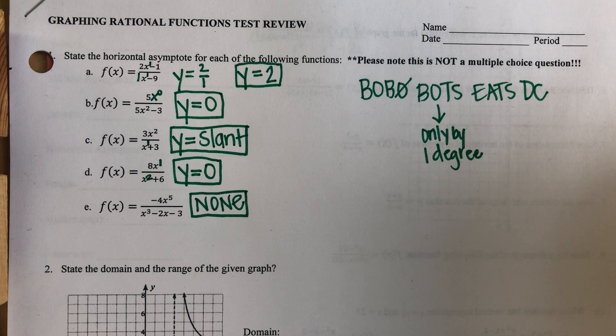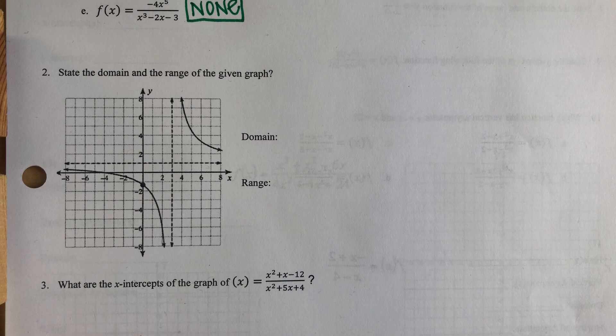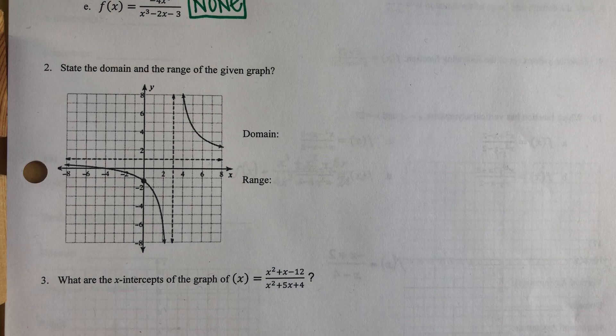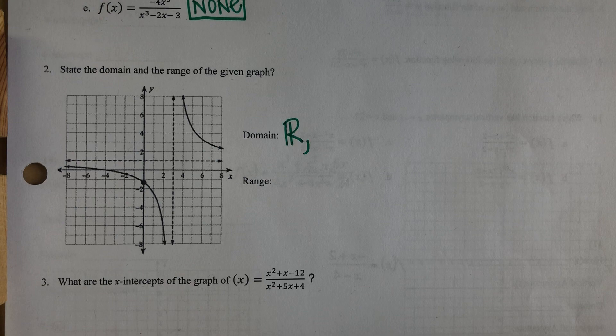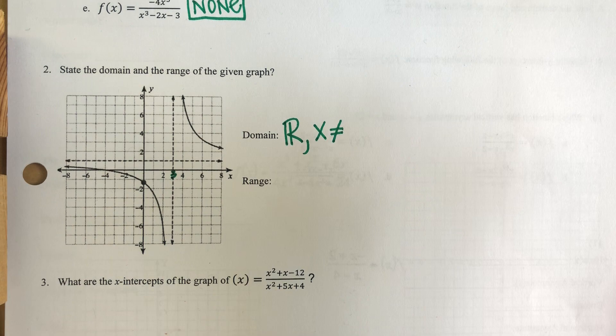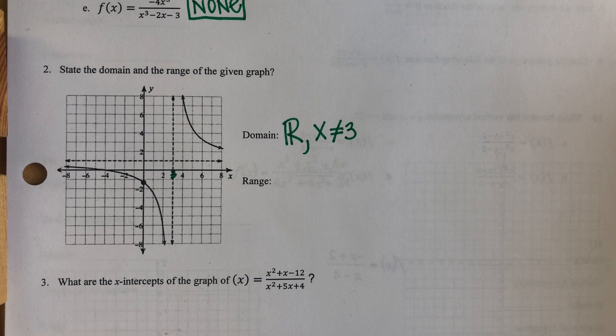Question number two: state the domain and the range of the given graph. I don't have an equation for my line and that's okay because I'm already given the picture. If you look very carefully, you already have these asymptotes. I always say that my domain is all real numbers, but then I have to state whatever restrictions are there. I'm looking from left to right and I see that there is a break in my graph right here when X is three. So I'm going to state that my domain is all real numbers when X is not equal to three.